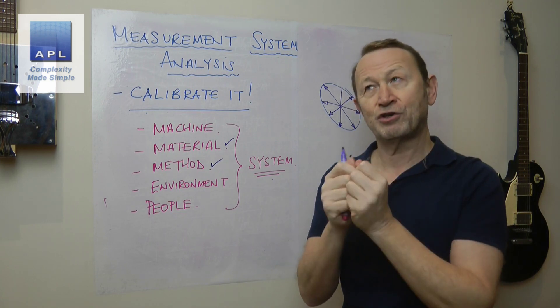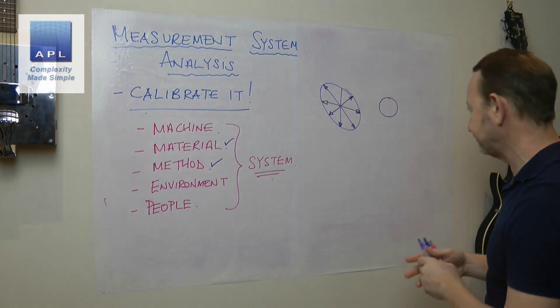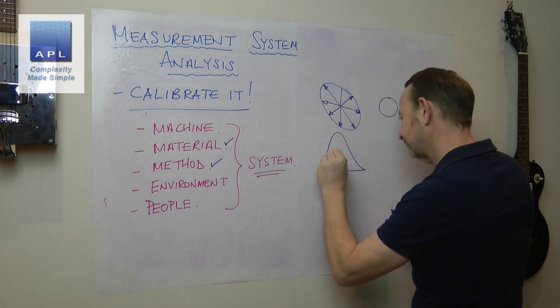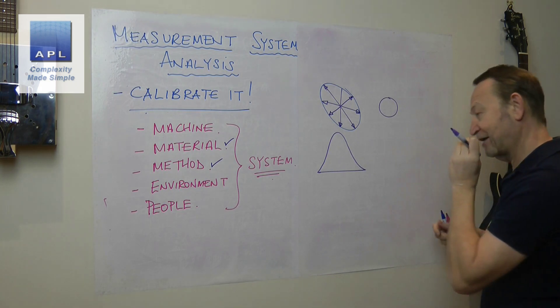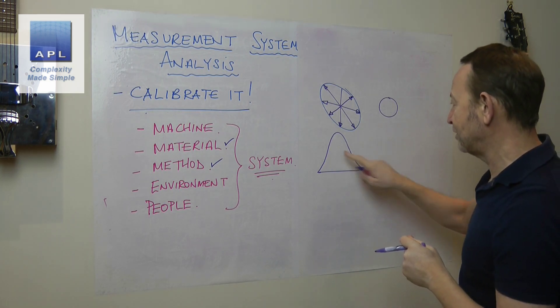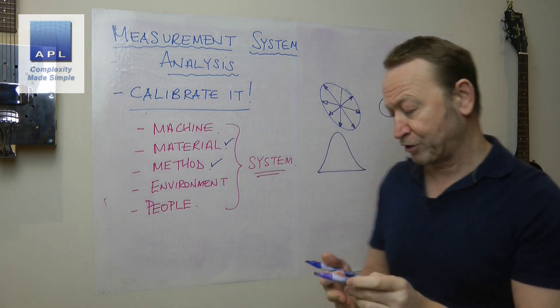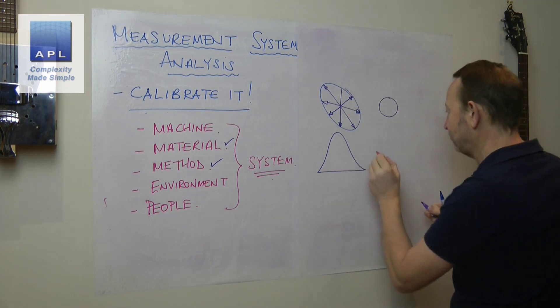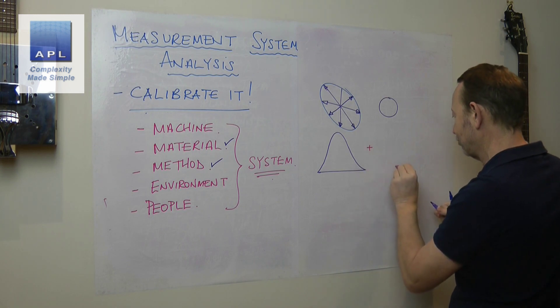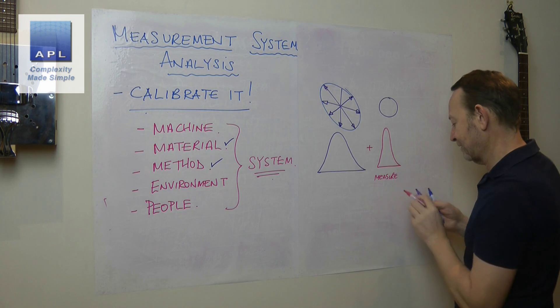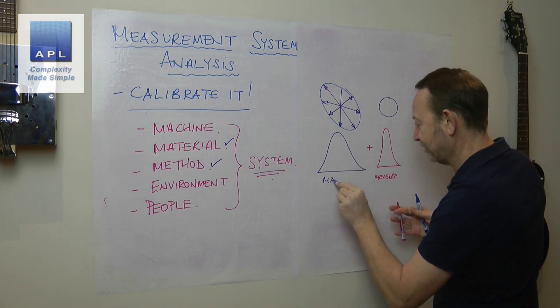And here's what it does to your view of your process. Your process is making a distribution, so it's producing parts and it's making a distribution. Now you would like to see that distribution, but unfortunately before you see that distribution, you have to put it through a second process, which is the measuring process. So this is the manufacturing process here.